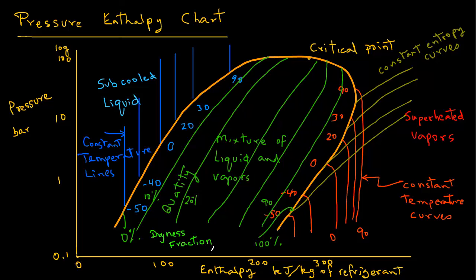So these are all the different regions and conditions of the refrigerant that we can express on a pH diagram.